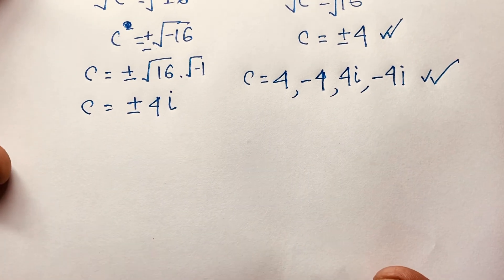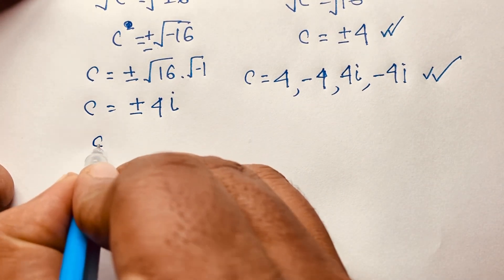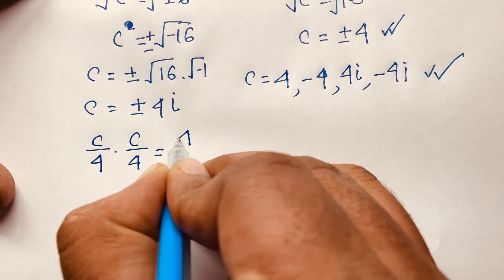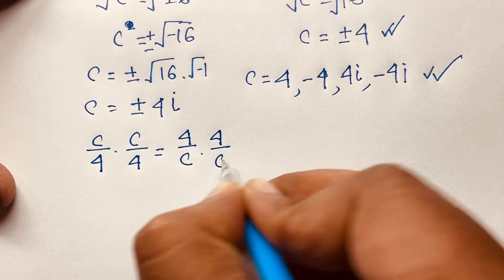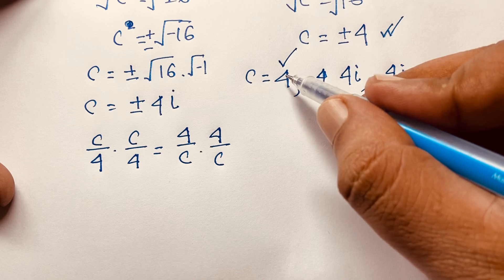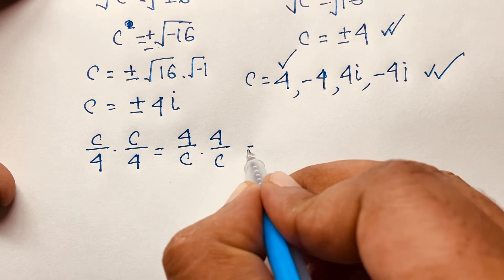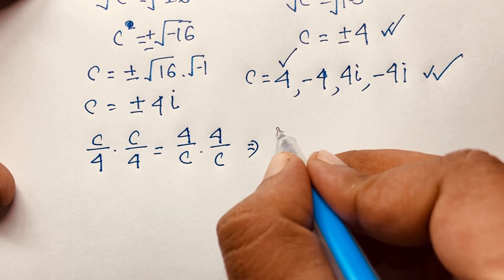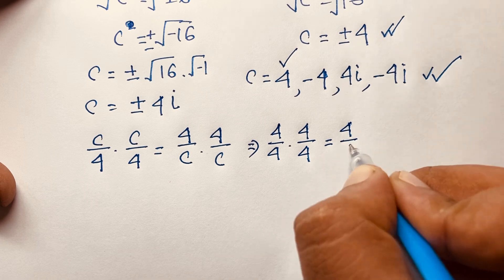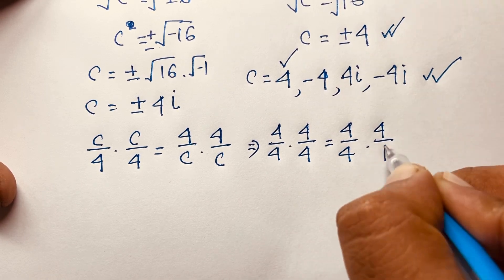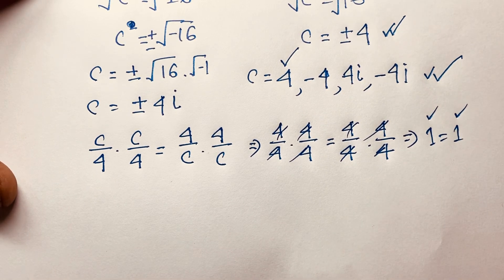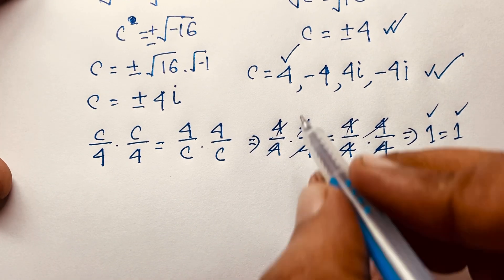Let's check our answer. The question is c over 4 times c over 4 equals 4 over c times 4 over c. When c equals 4, it becomes 4 over 4 times 4 over 4 equals 4 over 4 times 4 over 4. Cancelling out, we find 1 equals 1. Left-hand side equals right-hand side, so c equals 4 is correct.